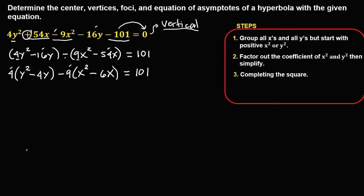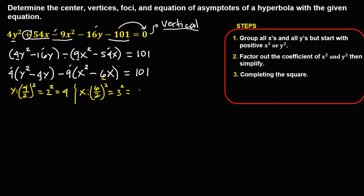Then do completing the square. For y, take the coefficient of y, which is 4, divide by 2, then take the square: 4 divided by 2 is 2, and 2 squared is 4. For x, take the coefficient of x, we have 6 divided by 2, take the square: 6 divided by 2 is 3, and 3 squared is 9.